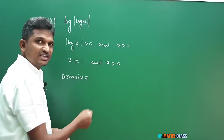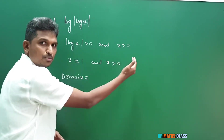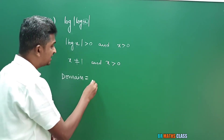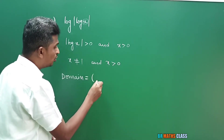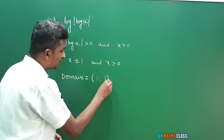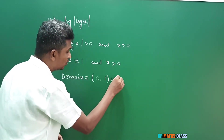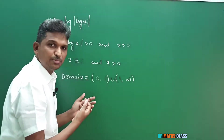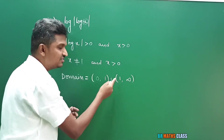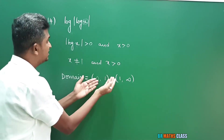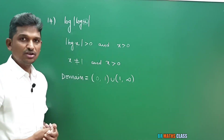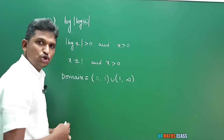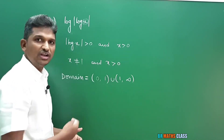x must be greater than 0, meaning all positive real numbers, but x cannot be equal to 1. So the domain is the open interval (0, 1) union (1, infinity). For these values, this function is defined.